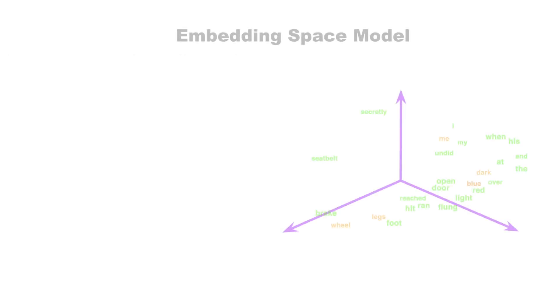Embedding spaces represent words as vectors such that two words are closer in this space if they are closer semantically or in meaning. For example, red and blue would be closer than red and seatbelt.